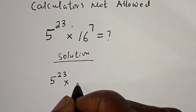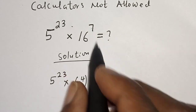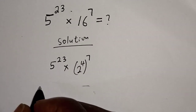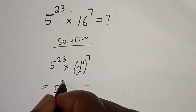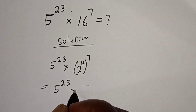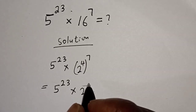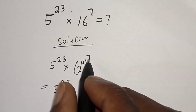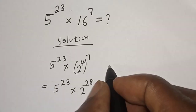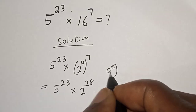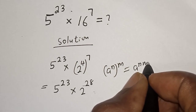16 can be written as 2 raised to power 4, then all raised to power 7. This is equal to 5 raised to power 23 multiplied by 2 raised to power 4 times 7, that is 28. That is from this rule: a raised to power n, raised to power m, is equal to a raised to power n times m.